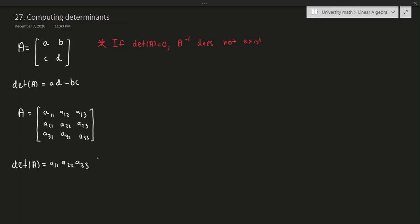Continuing the formula: plus a12·a21·a33, minus a11·a23·a32, minus a13·a22·a31. Don't worry about where this huge formula comes from — I'll show it in a more algorithmic way in just a moment.